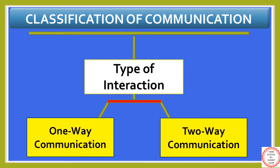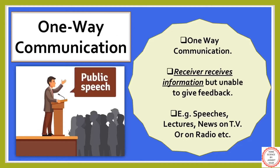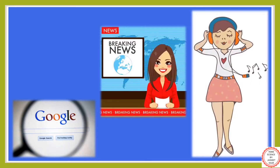One-way communication is that process of communication where the sender passes the information or message to the receiver, and the receiver receives the information but is unable to give feedback. Examples include politicians during public speeches, news reporters on television, radio jockeys on radio, etc. In all these cases, only one person is speaking and the others are listening without being able to give feedback.